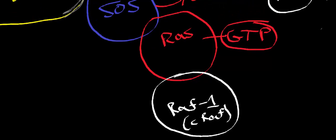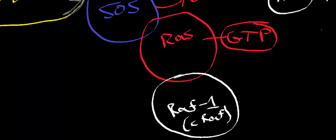This protein is called RAF-1, sometimes abbreviated C-RAF. The full name is RAS proto-oncogene serine-threonine protein kinase. This is a kinase. So when RAS gets activated by SOS by binding GTP, it binds RAF-1 and activates RAF-1.